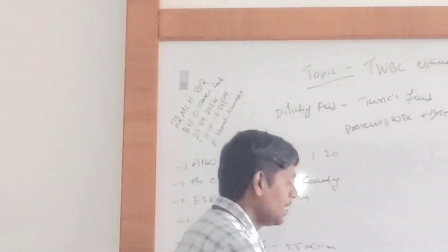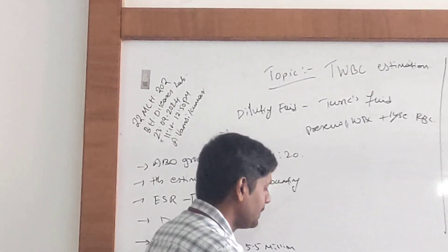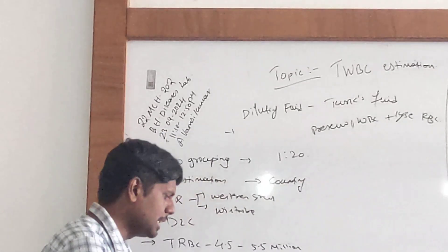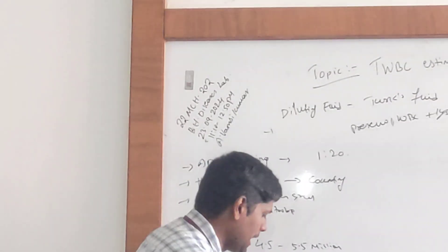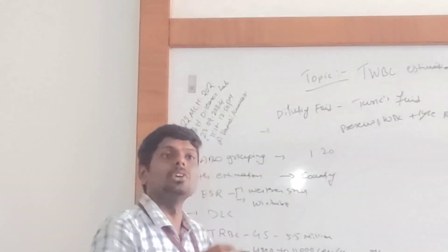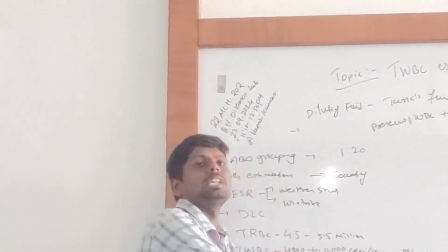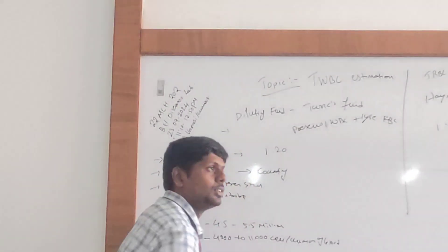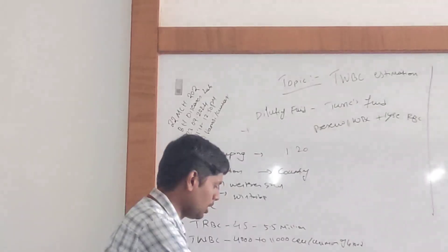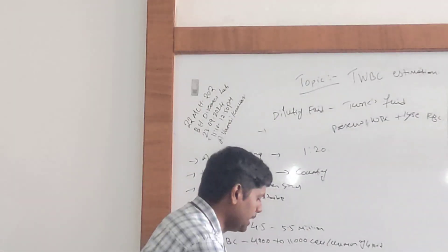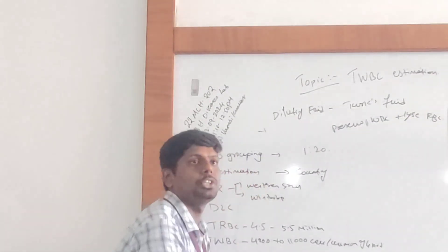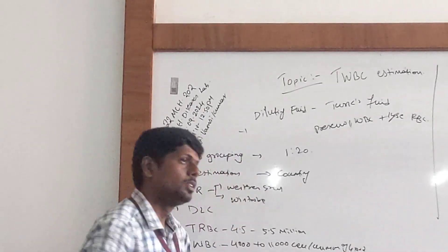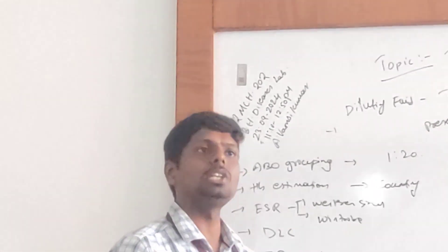How many boxes in each large square? 4×4. What is the volume of each square? 1 mm length and breadth, and 0.1 mm depth — the depth of the Neubauer chamber is 0.1 mm. Including depth, the volume is 0.1 mm³. So 1 mm cube is the volume of each large square.